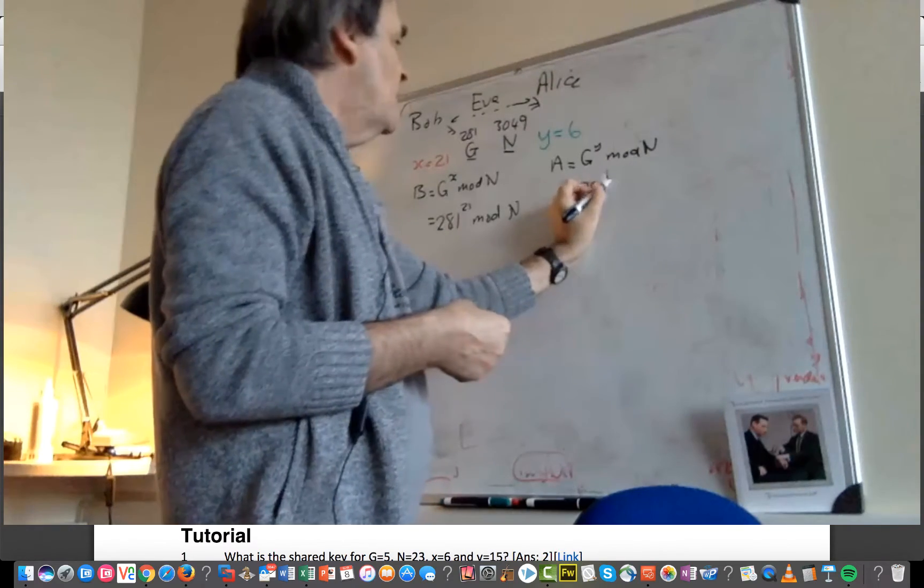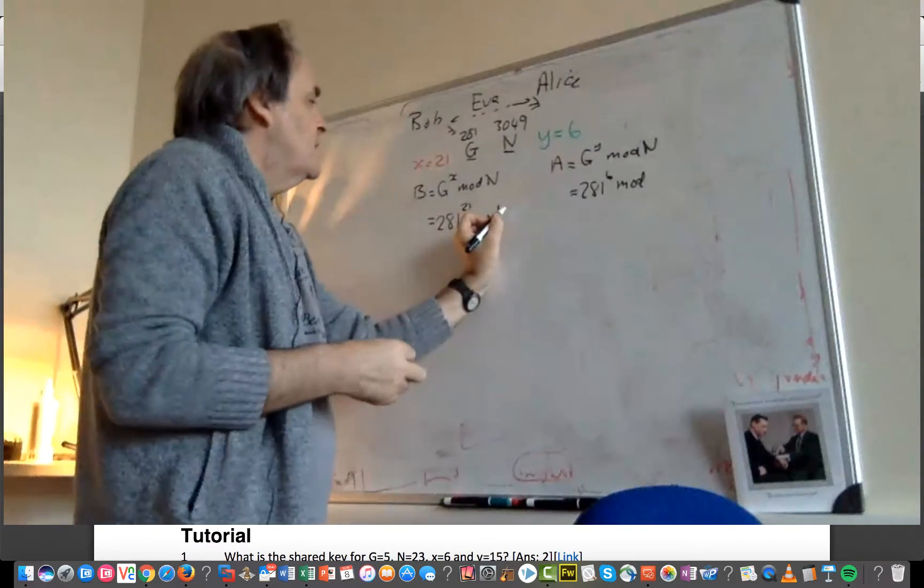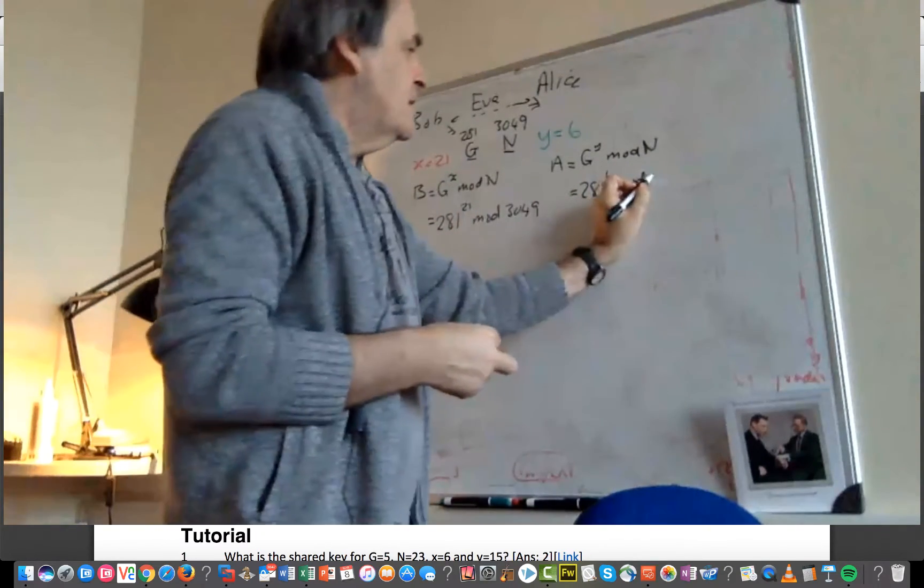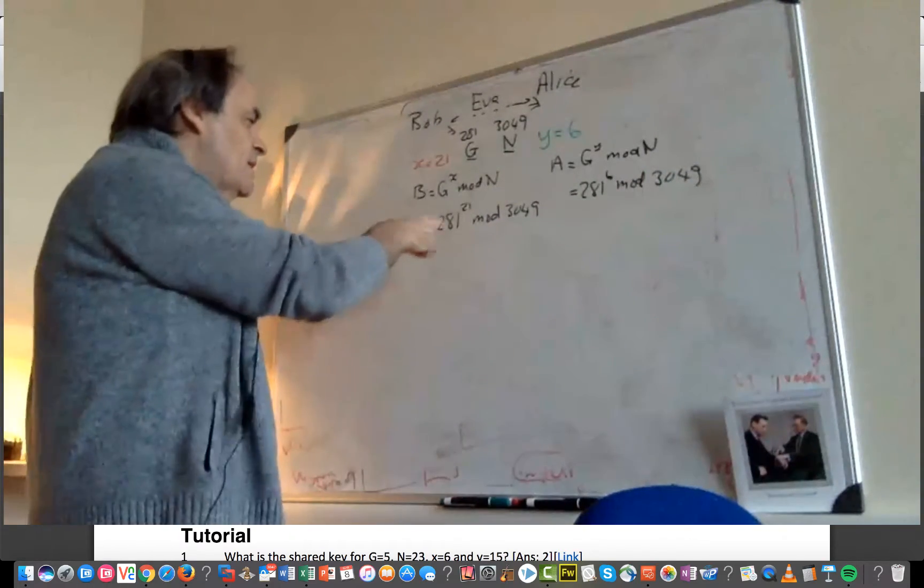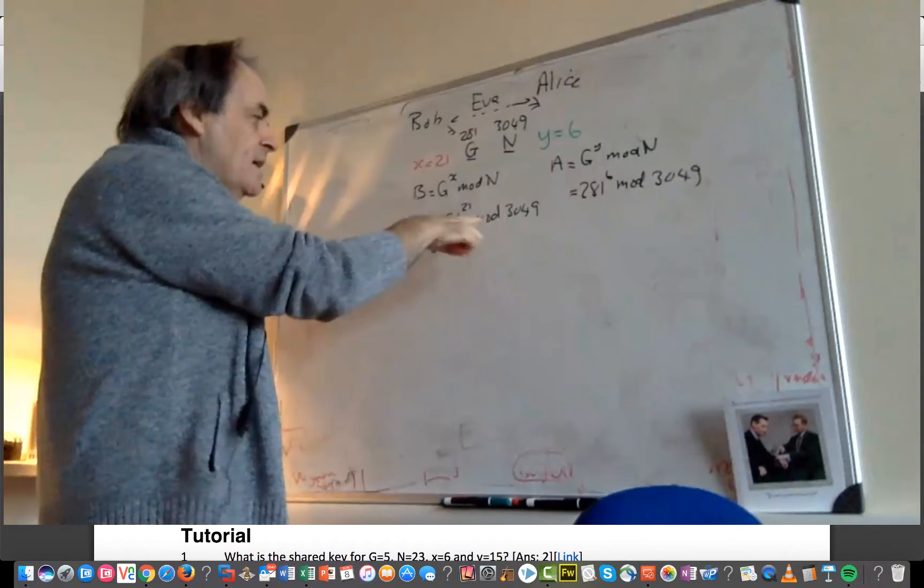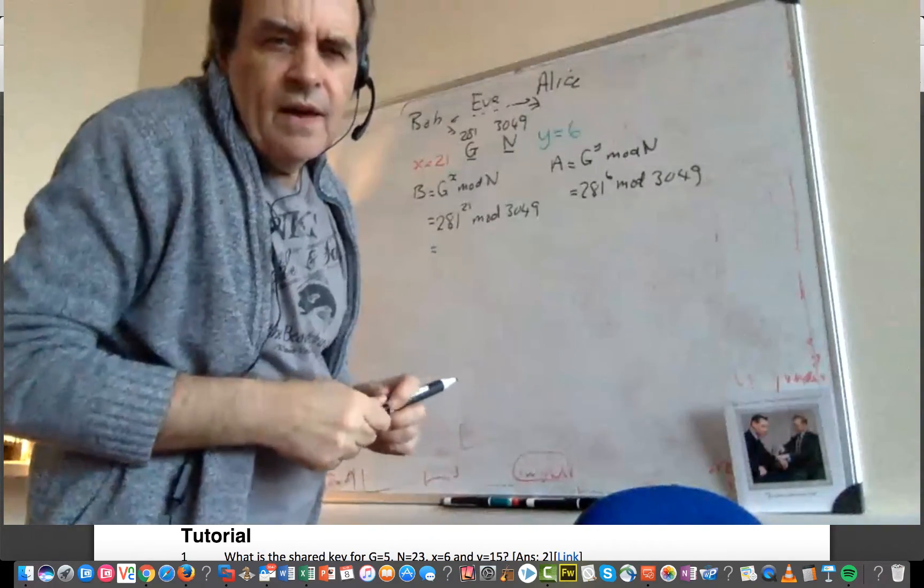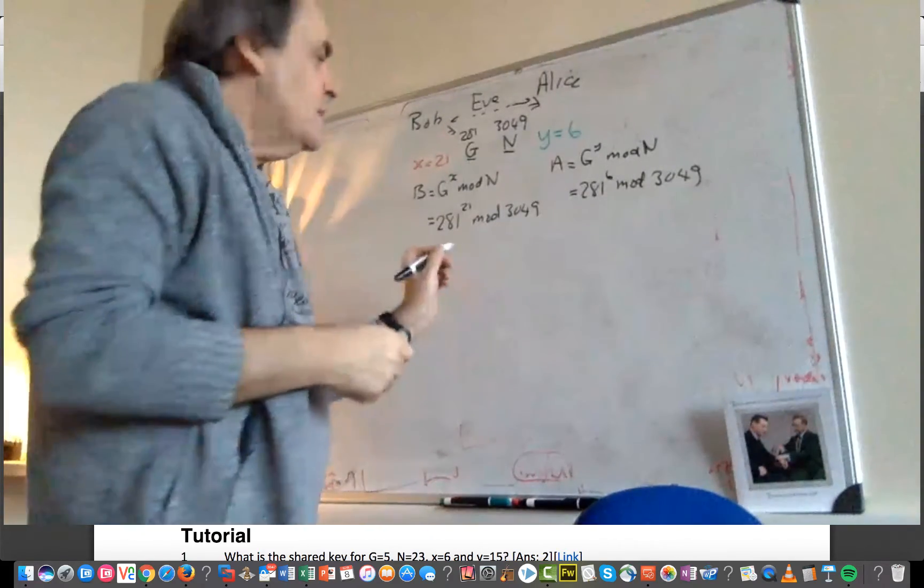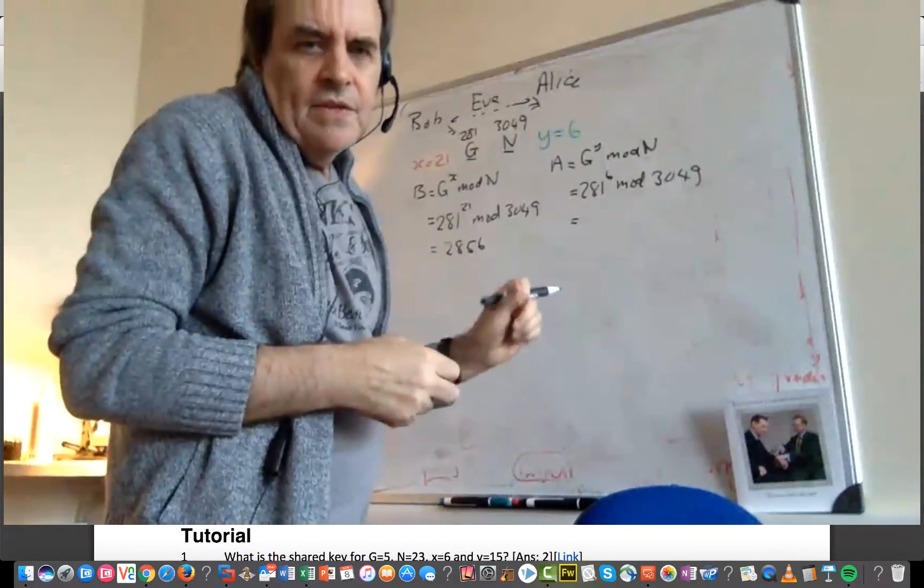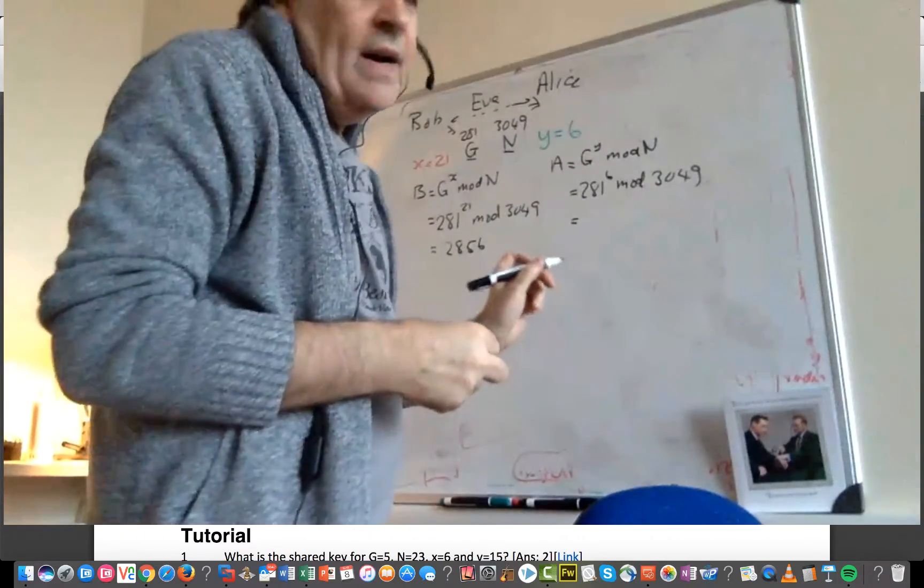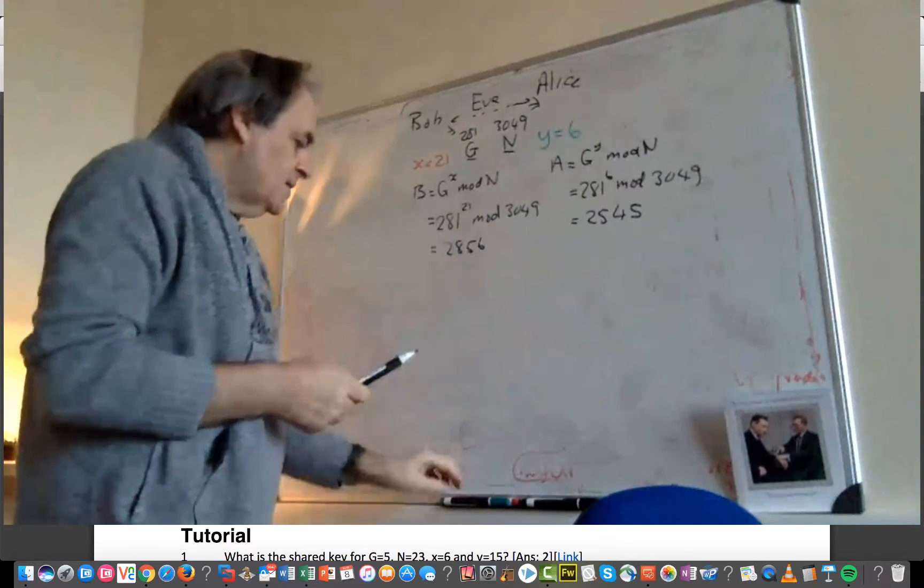And then Alice over here takes 281 to the power of 6 mod N. And the value of N is 3049. So we do this in the calculator: 281 to the power of 21, and then take a mod of 3049. We should end up with a value of 2856. Alice does the same and ends up with 2545.